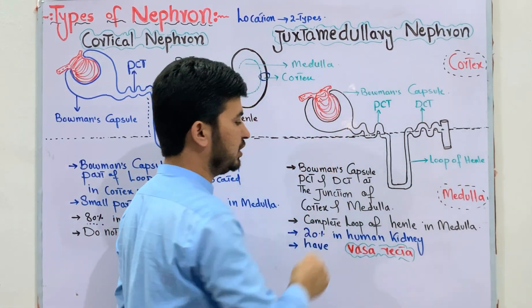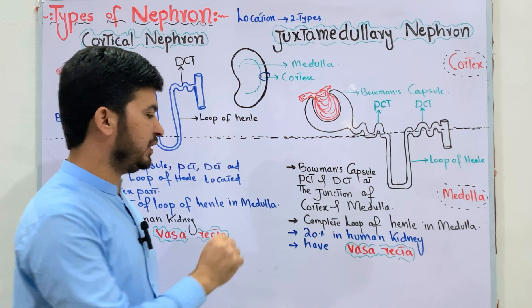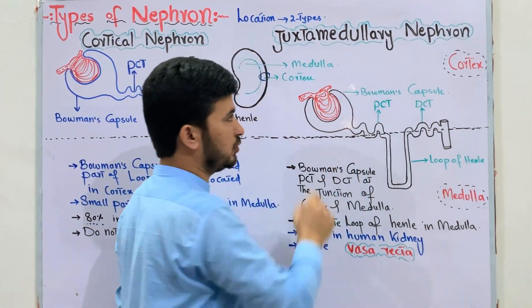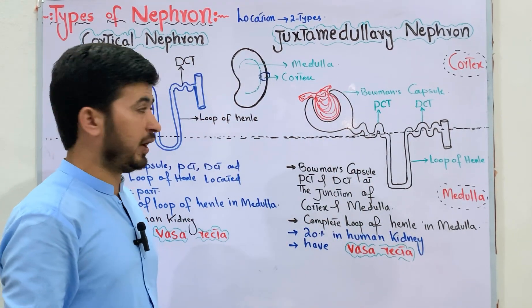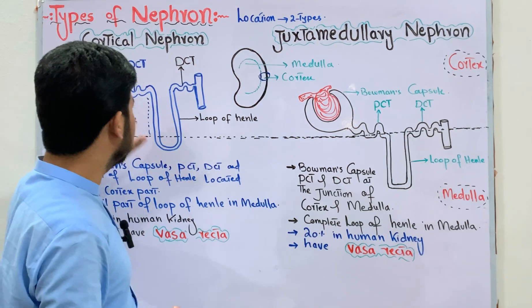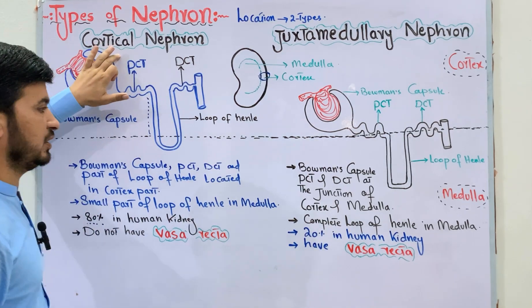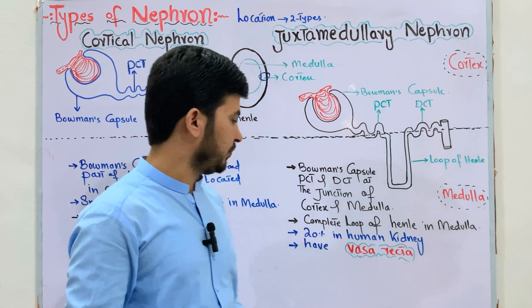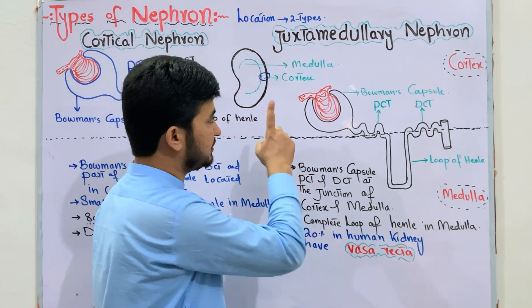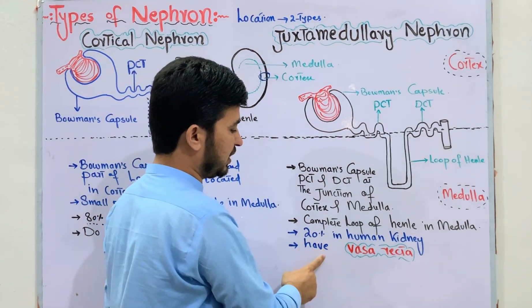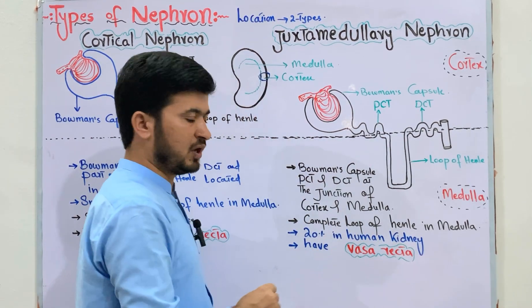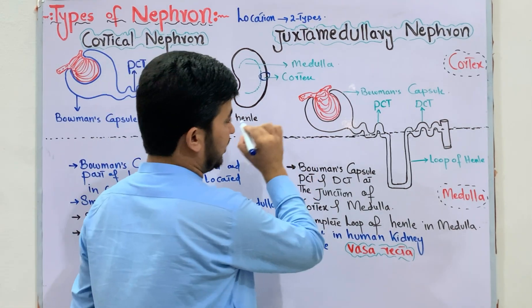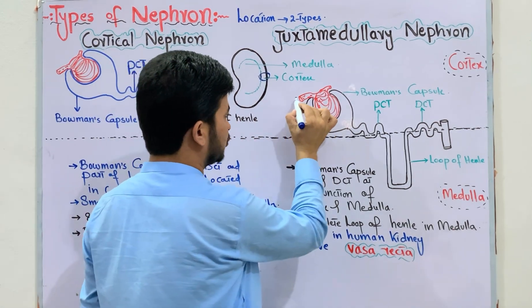In the human kidney, 20% of nephrons are juxtamedullary nephrons. So, 80% are cortical nephrons and 20% are juxtamedullary nephrons. In the juxtamedullary nephron, vasa recta is present.